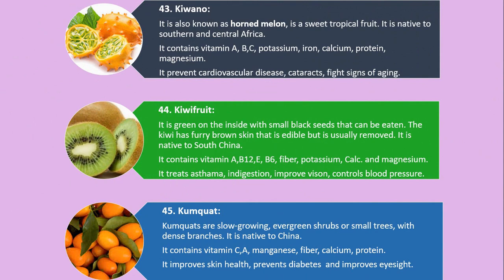Number 43. Kiwano. It is also known as horn melon and is a sweet tropical fruit. It is native to southern and central Africa. It contains vitamin A, B, C, potassium, iron, calcium, protein and magnesium. It prevents cardiovascular disease, cataracts, and fights signs of aging.